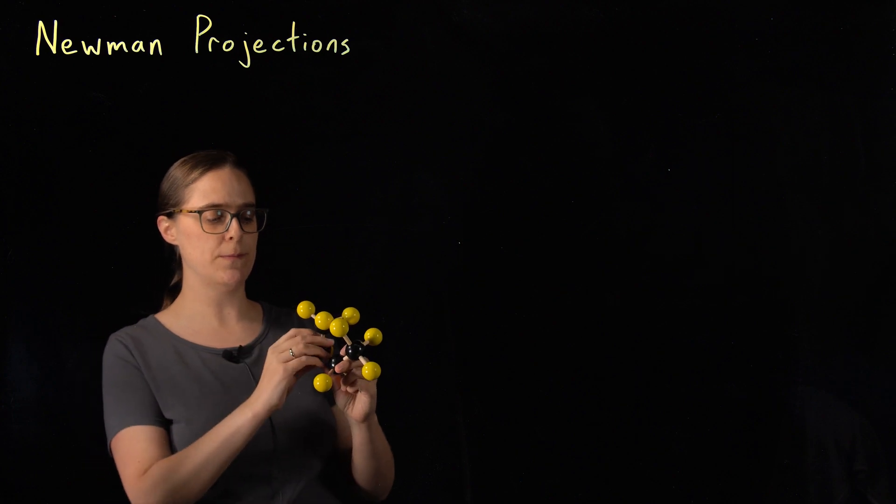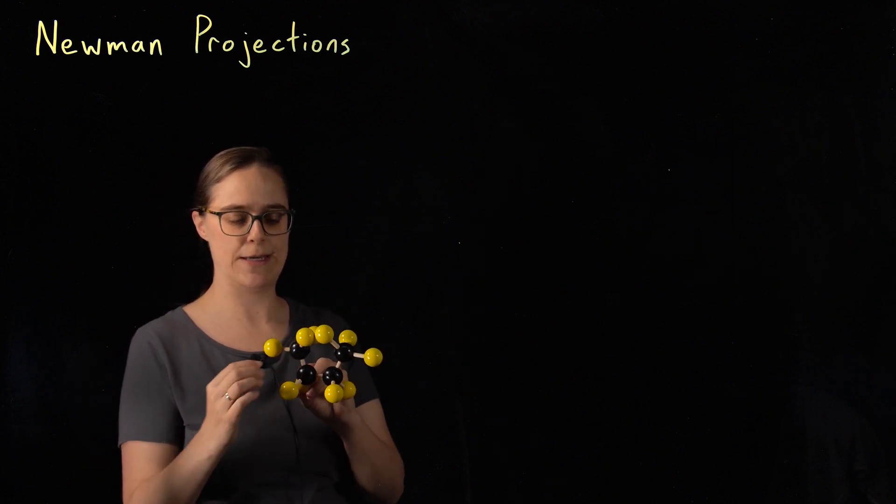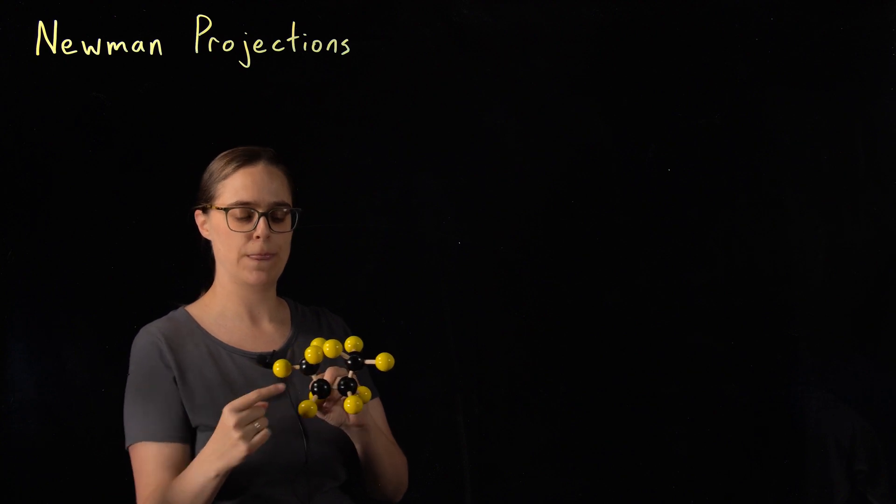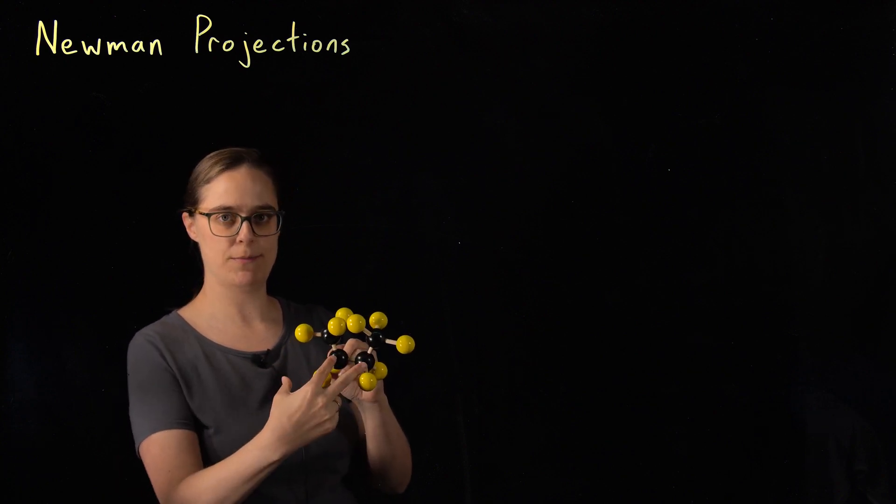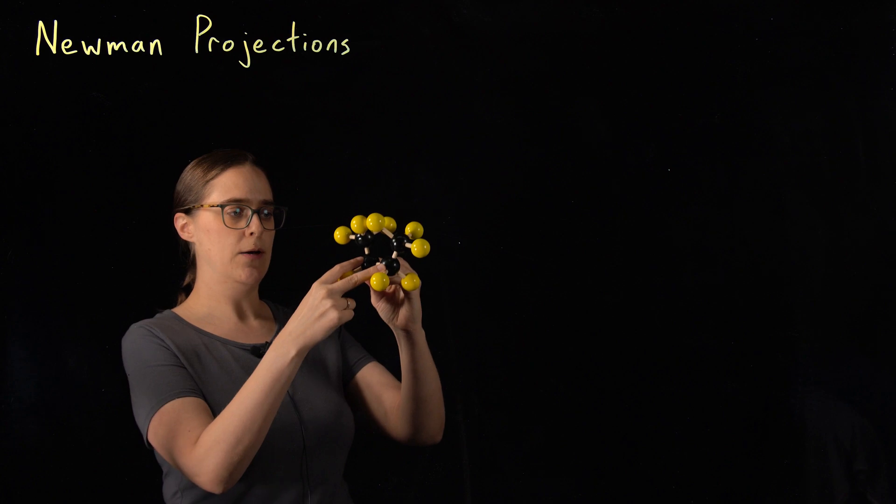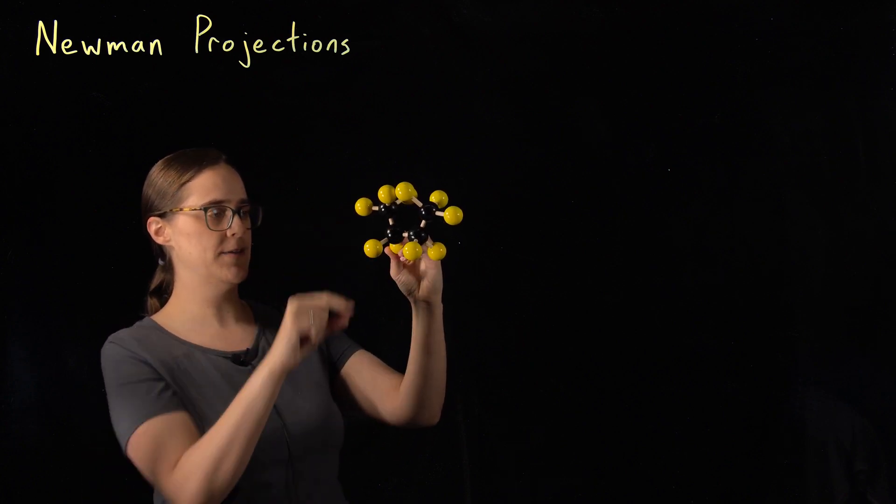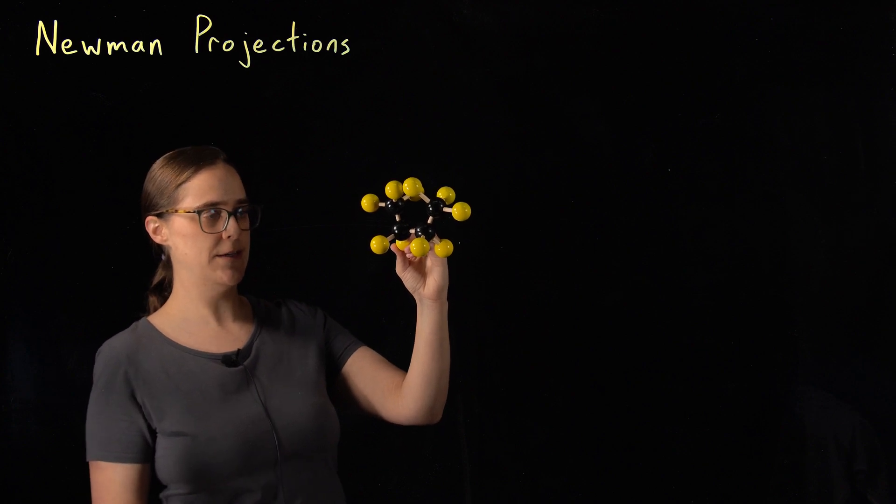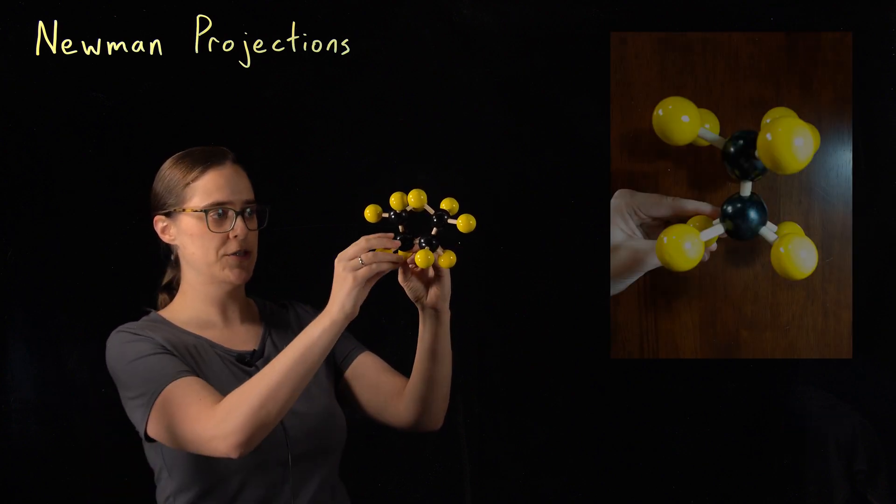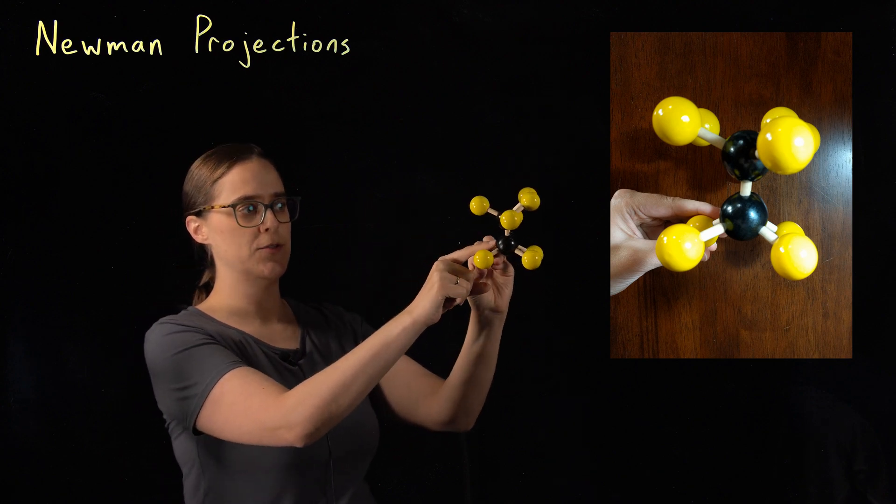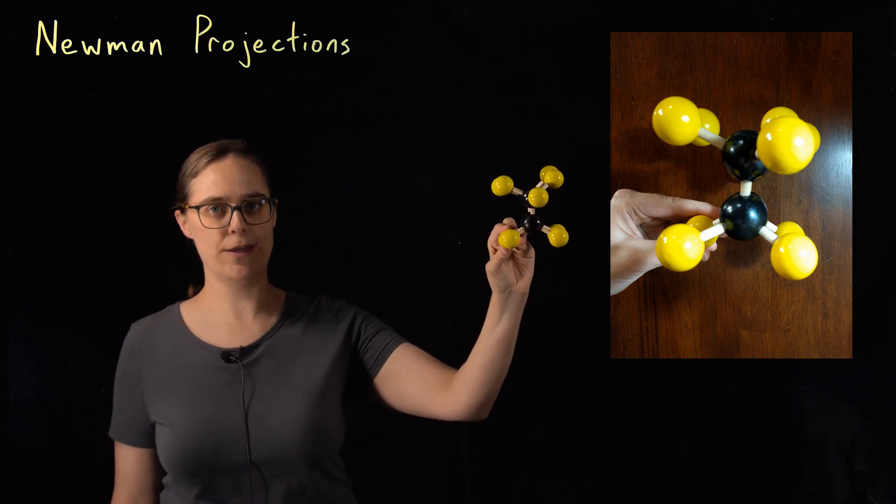I'm going to choose the bond between carbons 2 and 3. Let's number the carbons: 1, 2, 3, 4. If I'm drawing a Newman projection about carbons 2 and 3, I want to orient this molecule in such a way that carbon 2 and 3 are in my line of sight. This is the orientation from which I want to draw Newman projections. Let me rotate this molecule so that carbons 2 and 3 are in your line of sight.